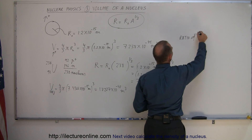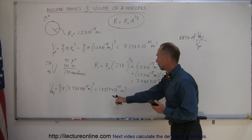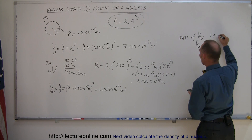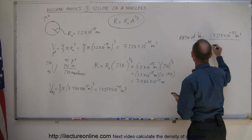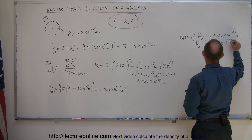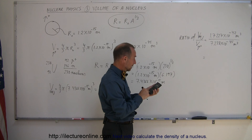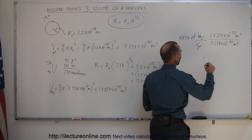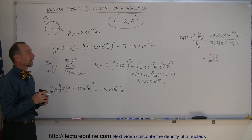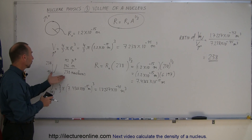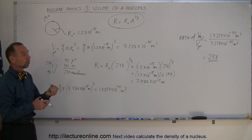The ratio of the volume of U-238 divided by the volume of a single proton: the volume of uranium-238 is 1.7227×10⁻⁴² cubic meters, divided by the volume of a single proton, which was 7.238×10⁻⁴⁵ cubic meters. Dividing those out — that comes out exactly to 238, which is of course what we expect. The volume of a uranium nucleus divided by the volume of a single proton is 238, which is the total number of nucleons in the nucleus.